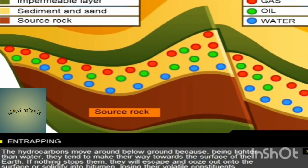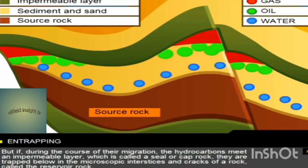These hydrocarbons are found at the heart of the rock called the source rock. The hydrocarbons move around below ground because, being lighter than water, they tend to make their way towards the surface of the earth.